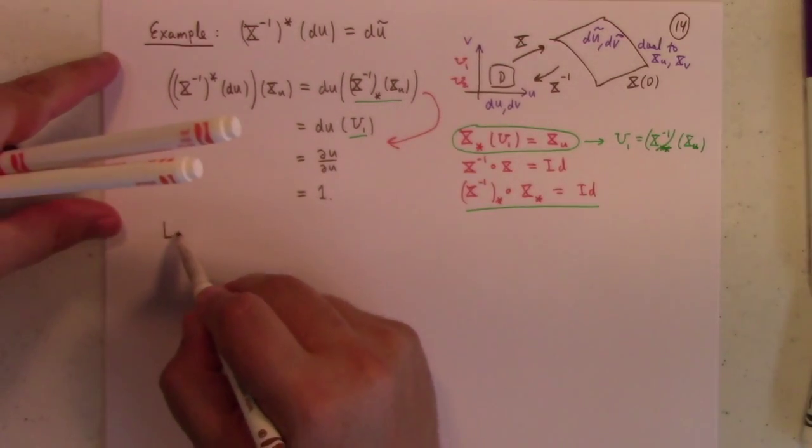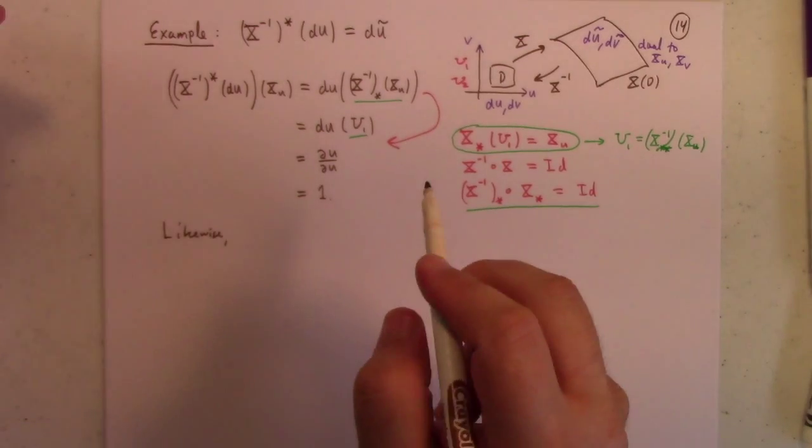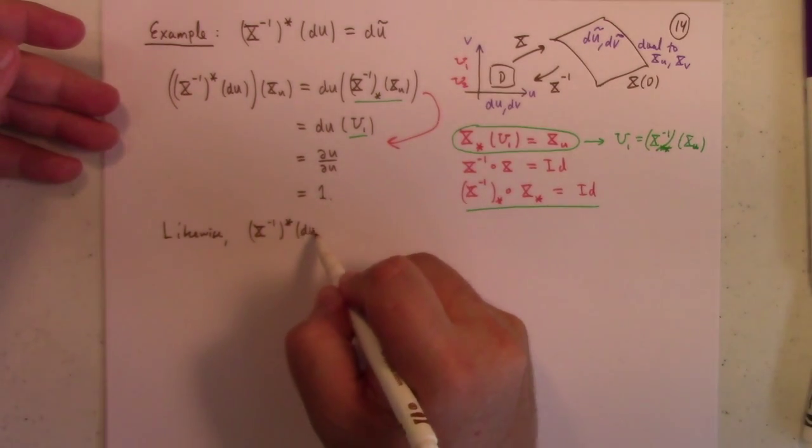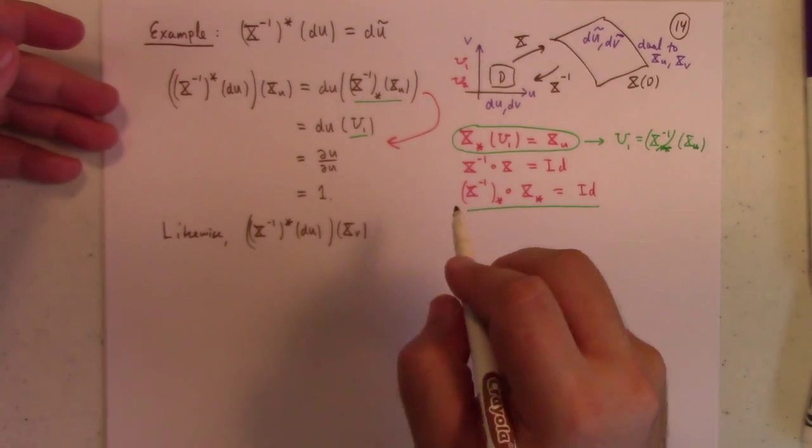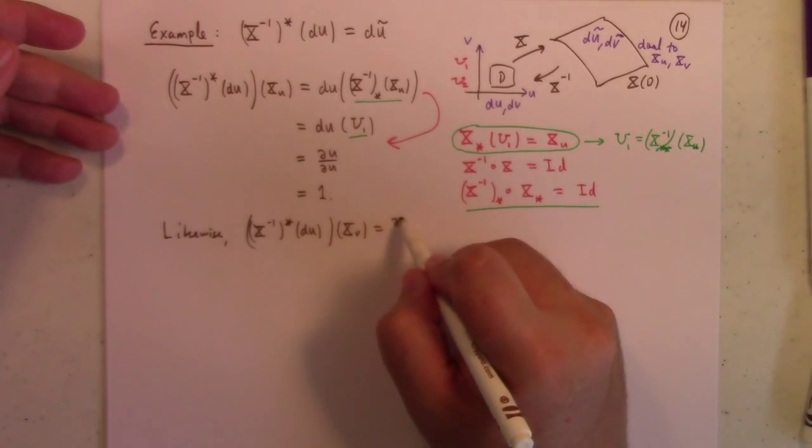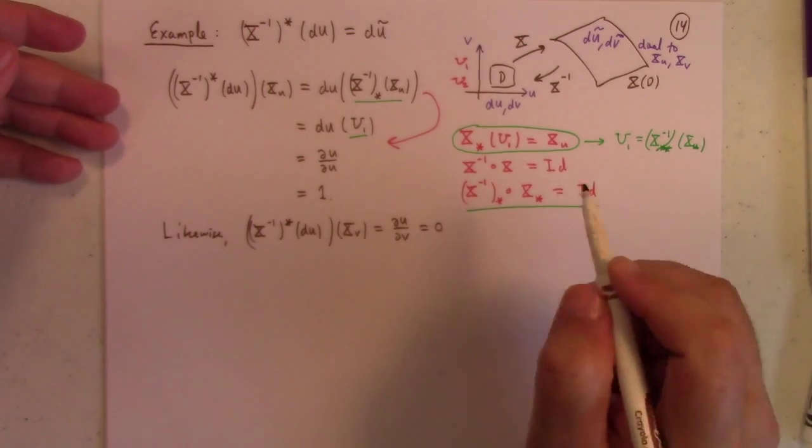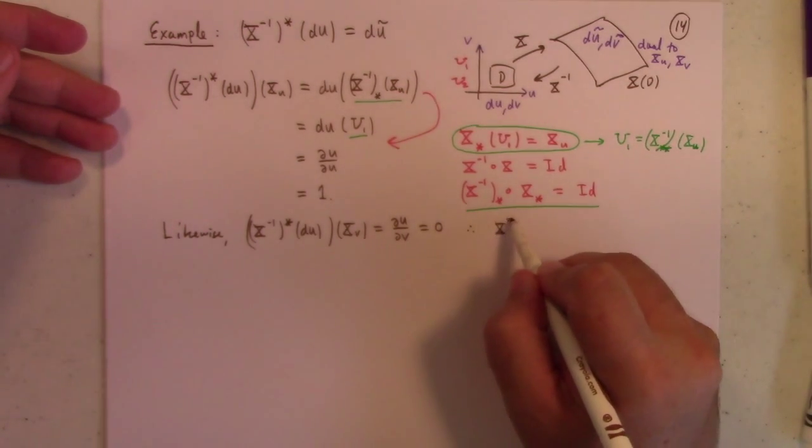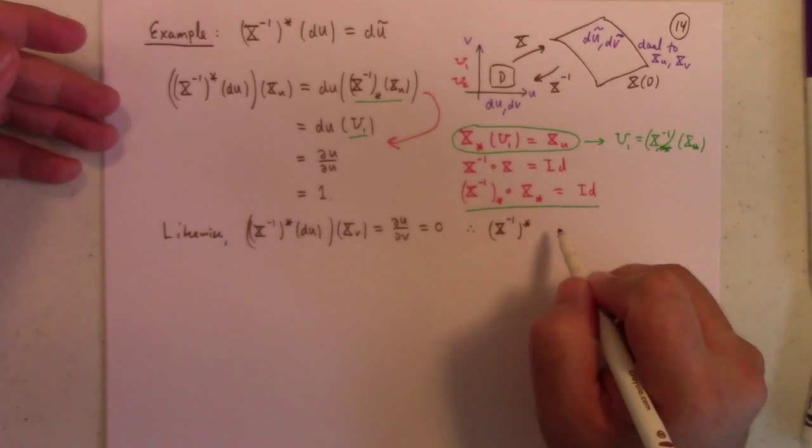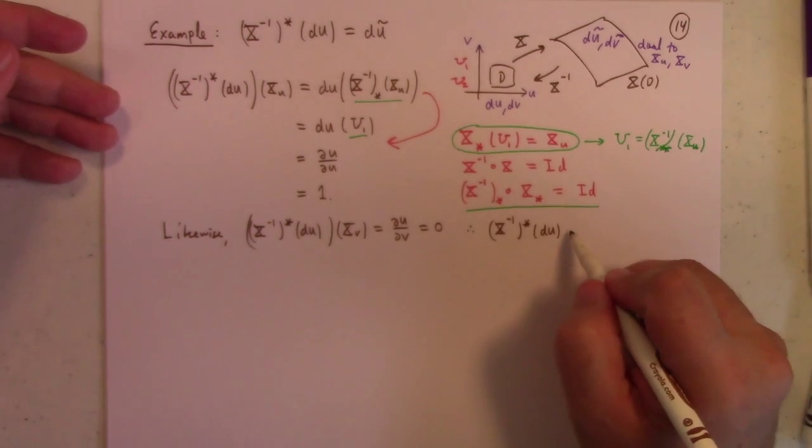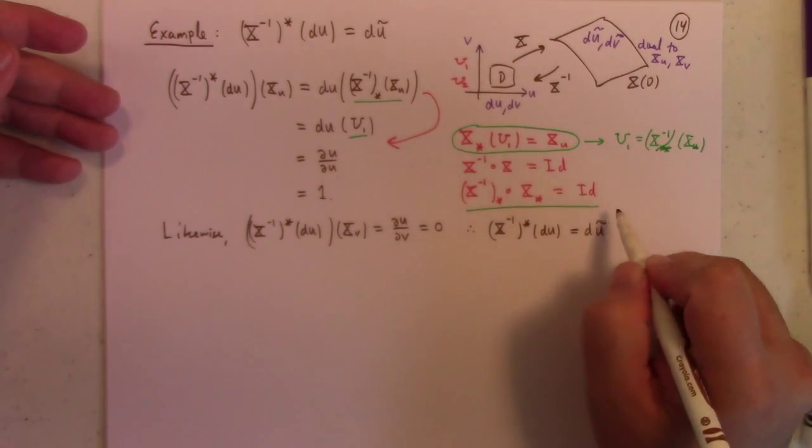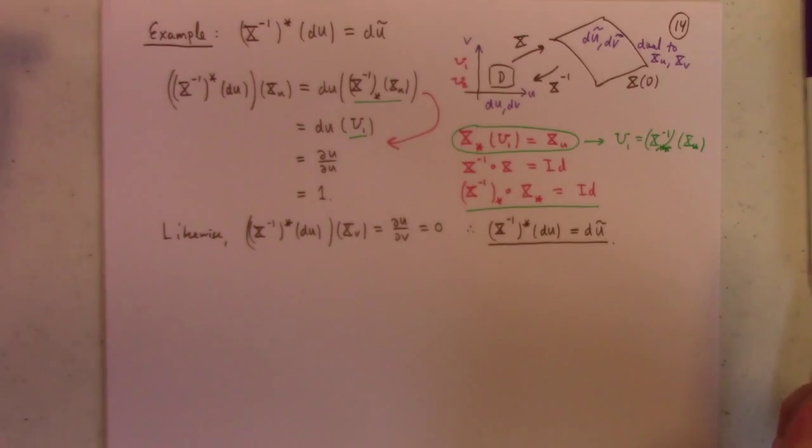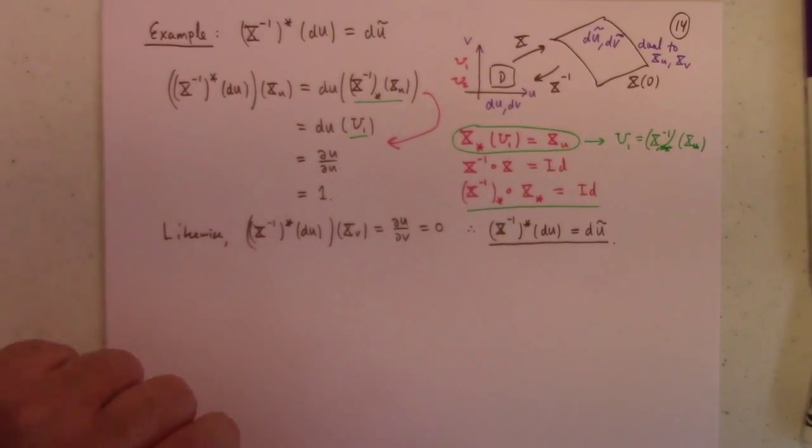Likewise, you can show that x inverse pullback of du acting on x_v is nothing more than partial u partial v, which of course is 0. And so, lo and behold, we've got what we want, which is that the inverse pullback on du, x inverse pullback du is nothing more than du tilde, because these two equations define du tilde. Extended linearly, and we can. So I wasn't lying to you. In fact, it is the pullback.